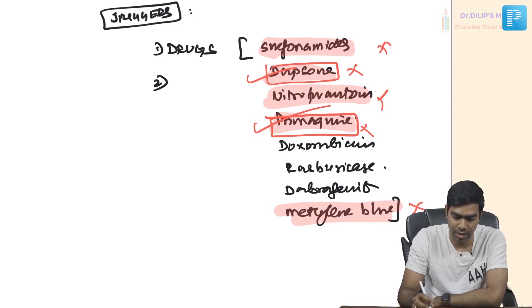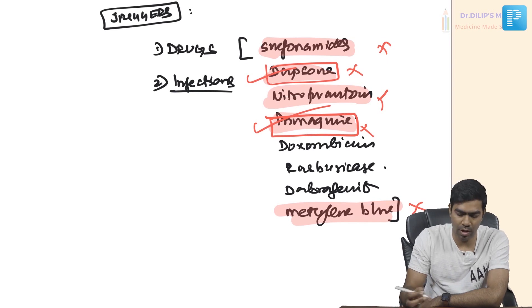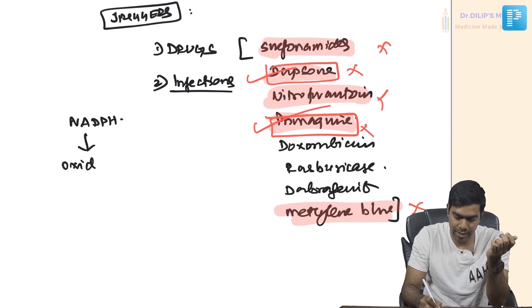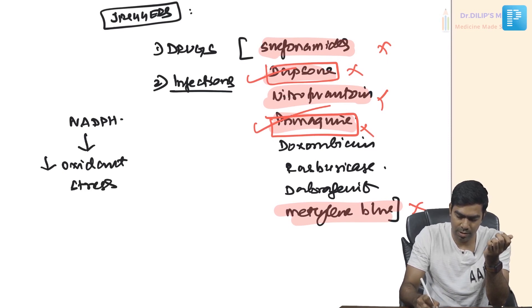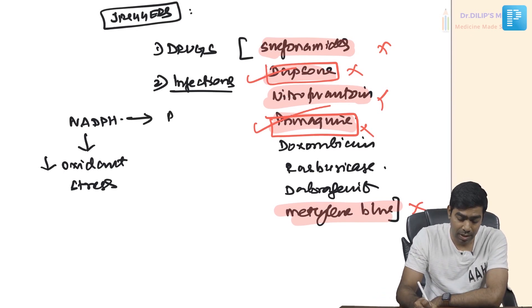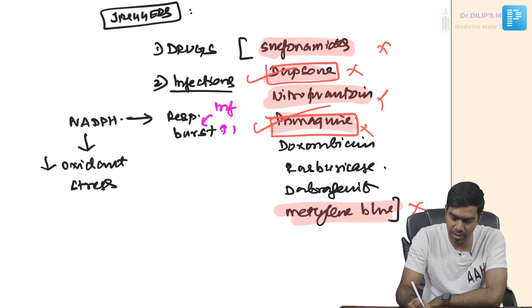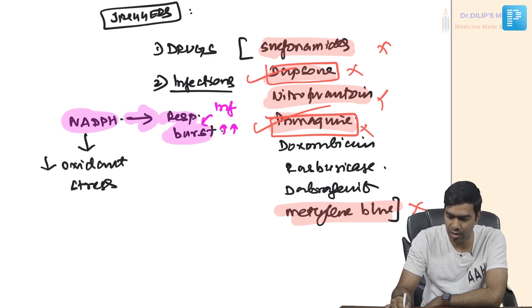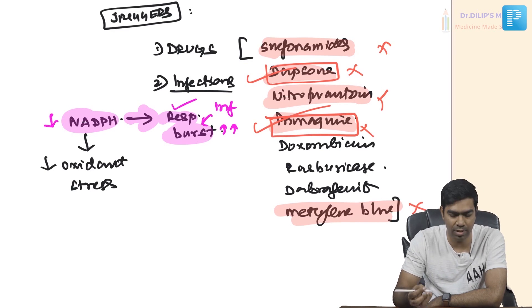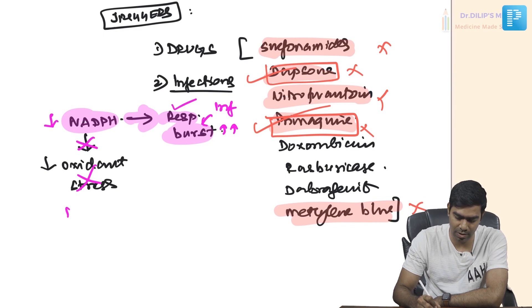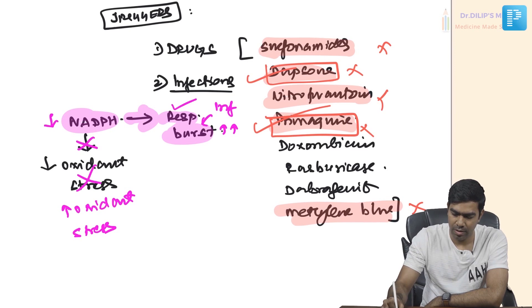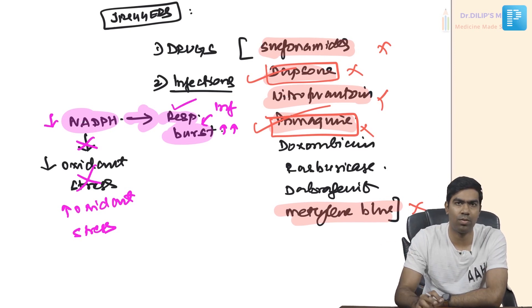The second trigger is infections. NADPH has two key purposes: tackling oxidant stress and fueling the respiratory burst. During infections, the respiratory burst consumes large amounts of NADPH. Since NADPH is already reduced in G6PD deficiency, very little remains to handle oxidant stress, causing oxidant stress to increase and trigger hemolysis.